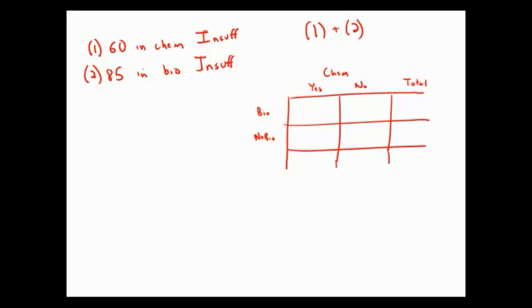So the students enrolled in a chemistry course, there are 60 students taking chemistry. That 60 includes the ones taking biology as well as the ones taking not biology, just chemistry. There are 85 students taking biology and that 85 includes the overlaps, the kids taking biology and chemistry as well as the kids only taking biology.